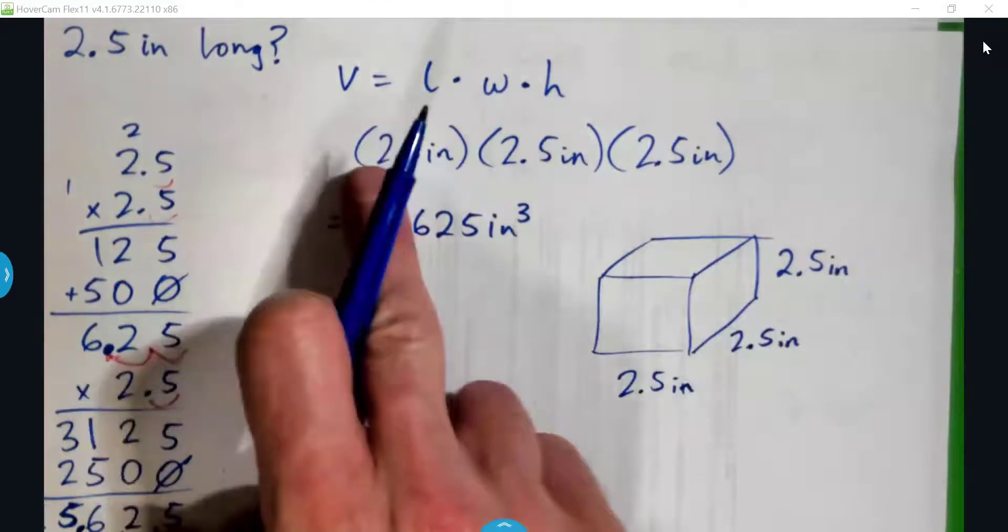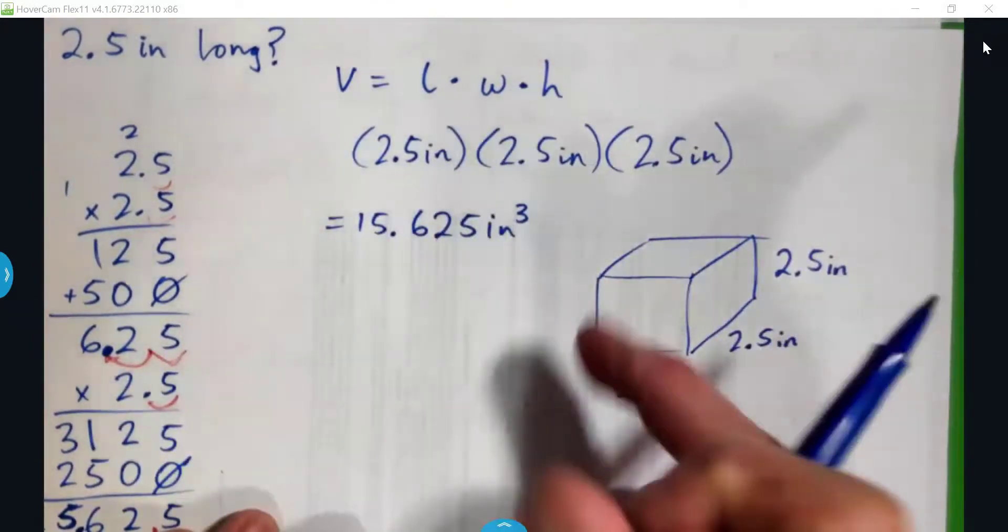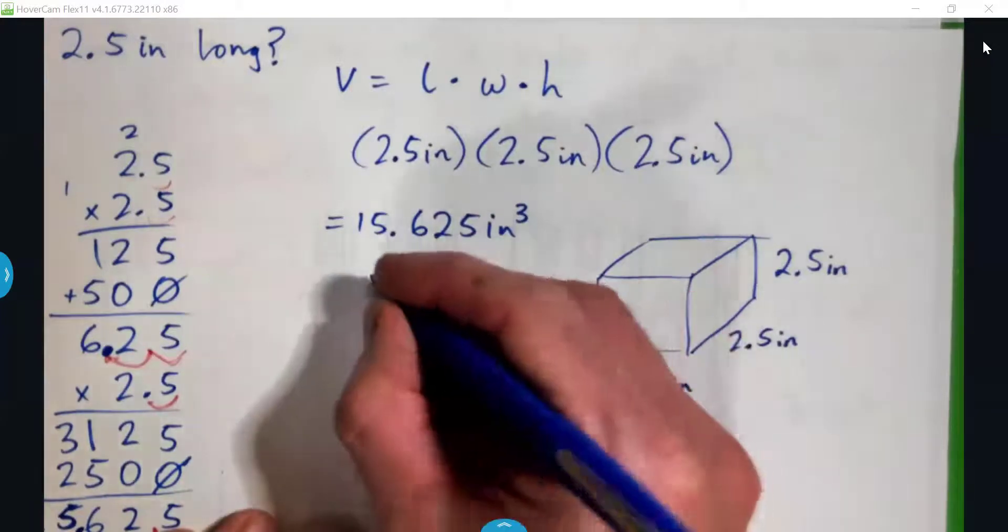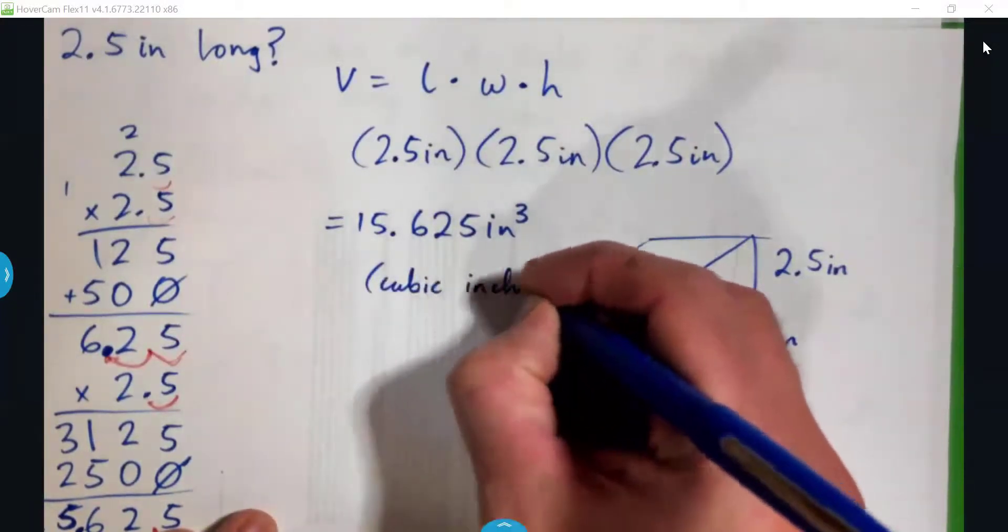And so that's our formula, length times width times height, so we multiply it, we get 15.65 cubic inches. So this is cubic inches, and that is the answer.